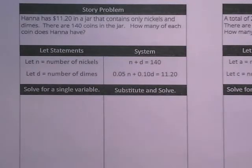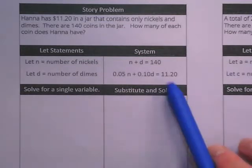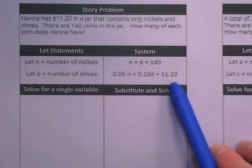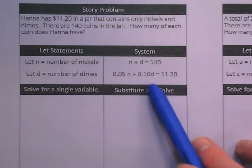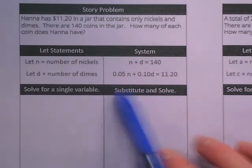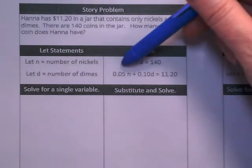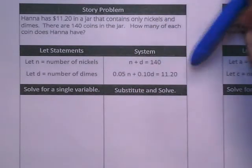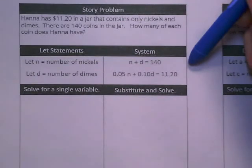Does N plus D equals 140 make sense? Because how many total coins does she have? What's the other total that we were given? 11.20. This has how much dimes are worth and how much nickels are worth. That makes sense if you think about it, because we need to know how much they're each worth when we're adding to the total of how much money she has.